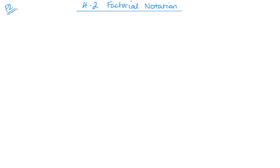Factorial notation is something you may or may not have seen before, but it looks like this. N will be a number and you get this exclamation mark afterwards — this is N factorial. So for example, 3 factorial is how you say this, and what it means is 3 times 2 times 1. And that's what you would work out.